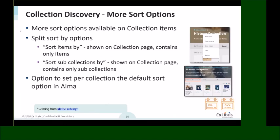We also added the ability to set the default sort option per collection. You can now go into collection management within Alma and define the default sort option for your patrons. For instance, for a new books collection, you may define the default sort as 'date newest,' so patrons opening that collection will immediately see items sorted by newest date. This was already released in July for Primo VE and will be available in Primo's August release.